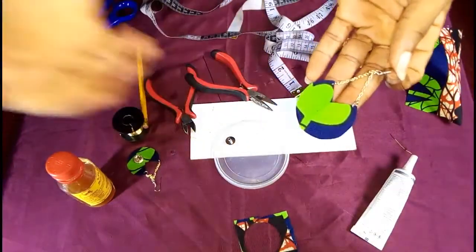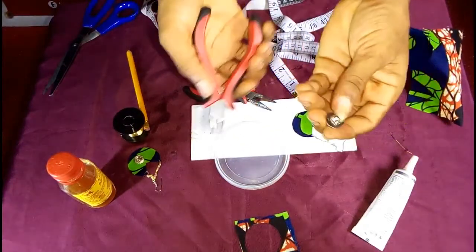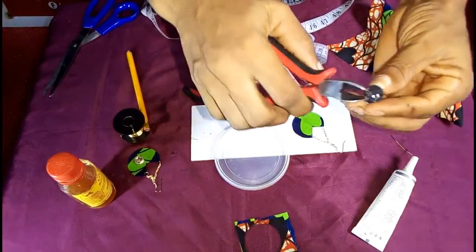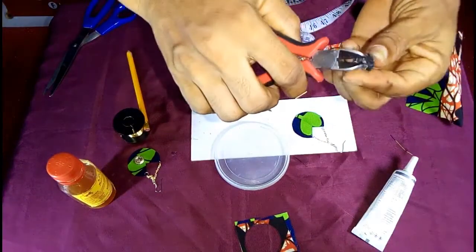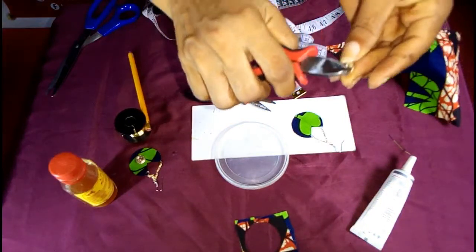The next thing is to pick a button. Cut off this side using your cutter and try to make it a bit smooth.